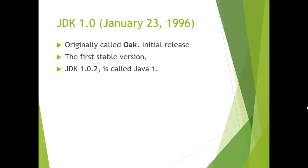After that, Java immediately released the next version on 23rd January 1996 — JDK 1.0, Java Development Kit 1.0. This version was originally called Oak and it is the first stable version of Java. One more internal version was also released, called Java 1.